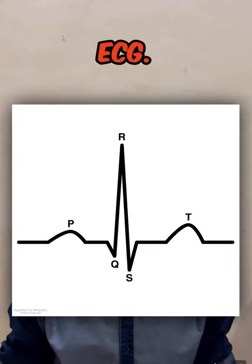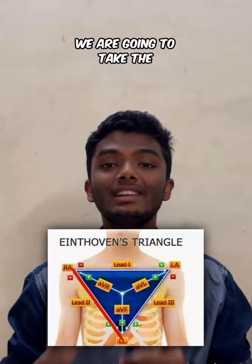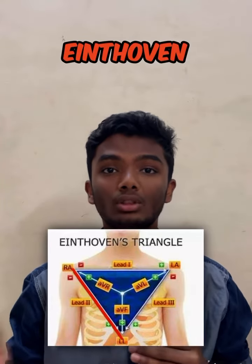Let's learn the reason behind the different waveforms present in a normal Lead II ECG. For this, we are going to take Lead II from Einthoven's triangle, which is directed from the right shoulder to the left foot. So whenever an impulse or signal is transmitted in the heart in this direction, we will get a positive wave, and if it is not, we are going to get a negative wave.